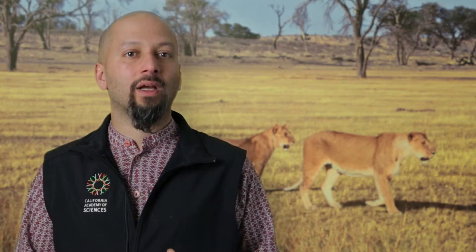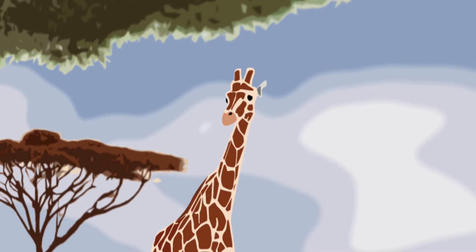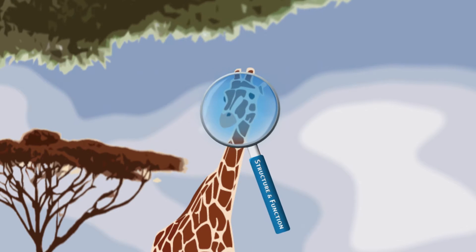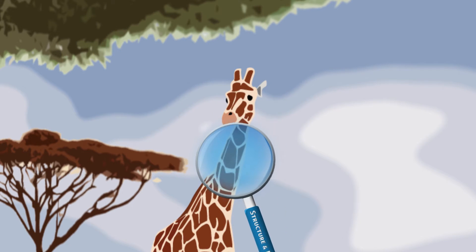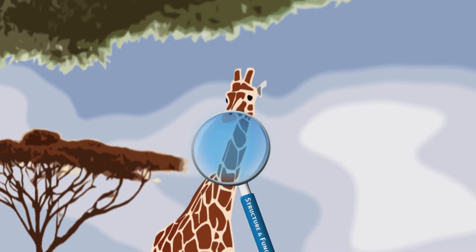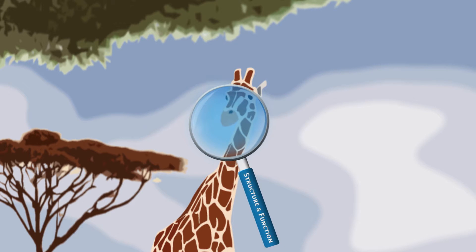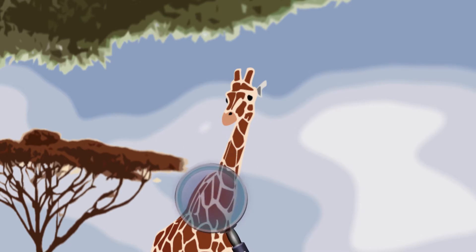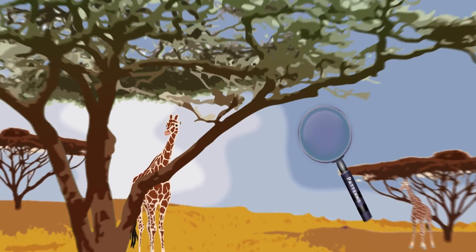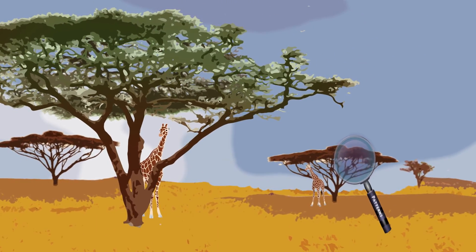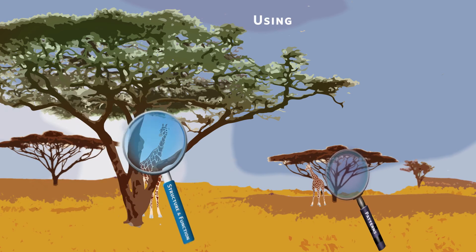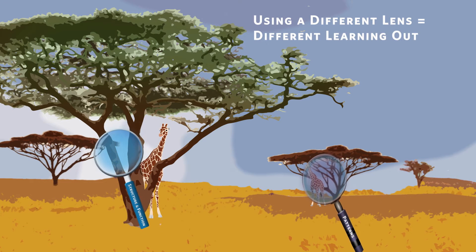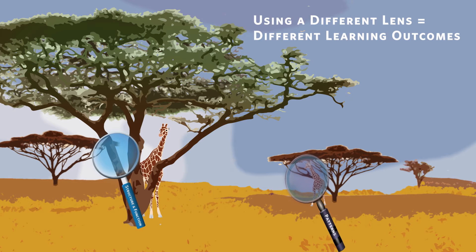In the second activity, participants will view a single phenomenon using two different CCCs as lenses. For example, if you look at a giraffe through a structure and function lens, you're probably going to take note of its long neck and how that serves the function of reaching acacia leaves. A pattern lens, however, might draw you to notice the giraffe's spots and how they serve as camouflage in the dappled sunlight around those acacia trees. This is a simple example.